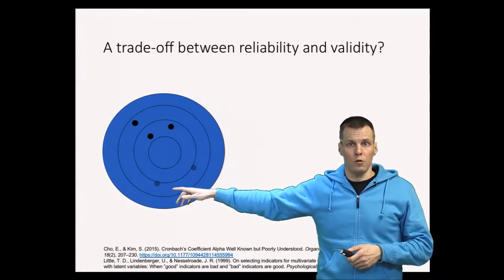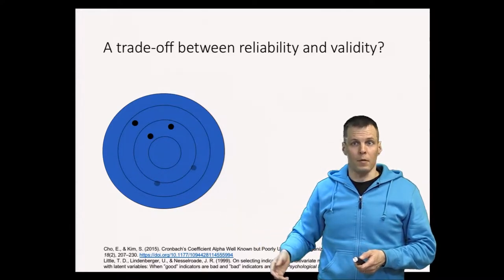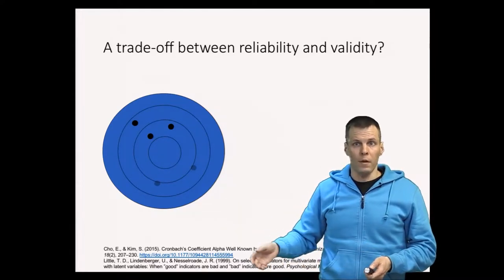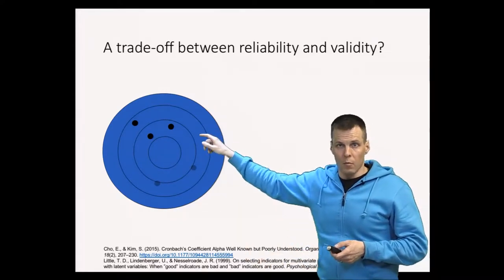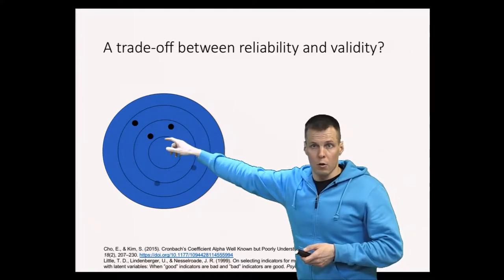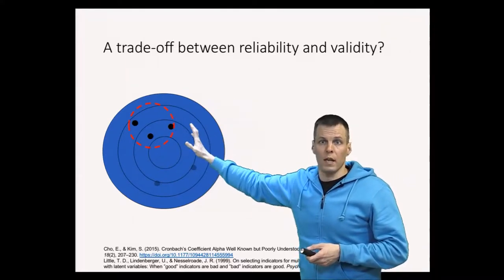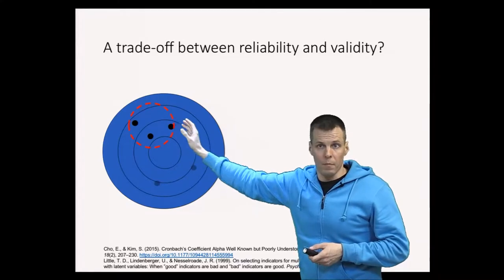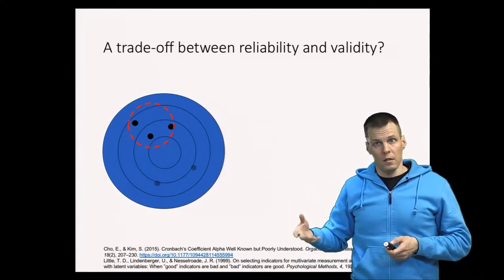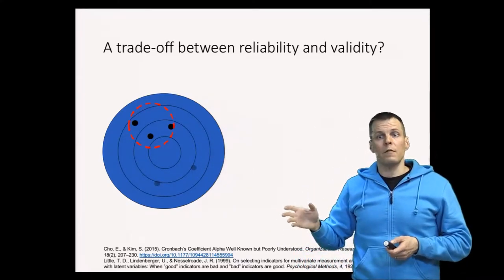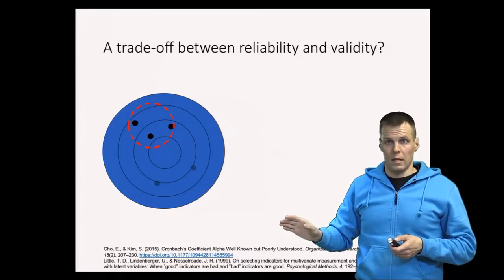So we take away these two shots, and alpha will go up because alpha quantifies how much the shots on the target are dispersed. That's our new estimate of alpha. Did reliability actually increase? The answer is no, not necessarily.